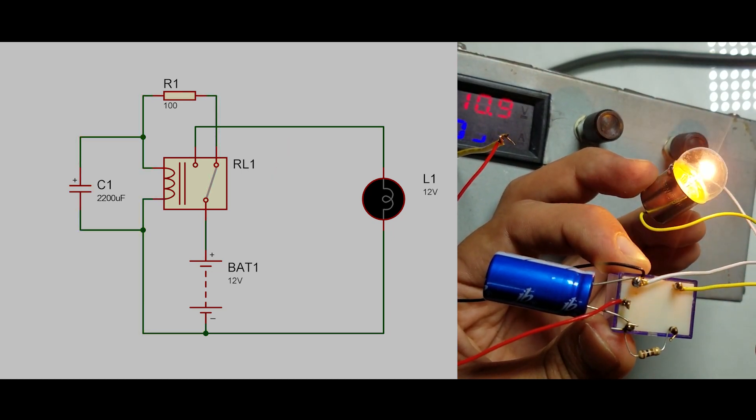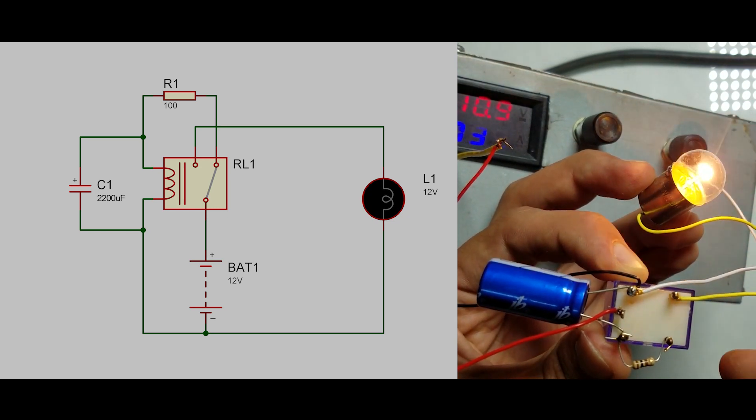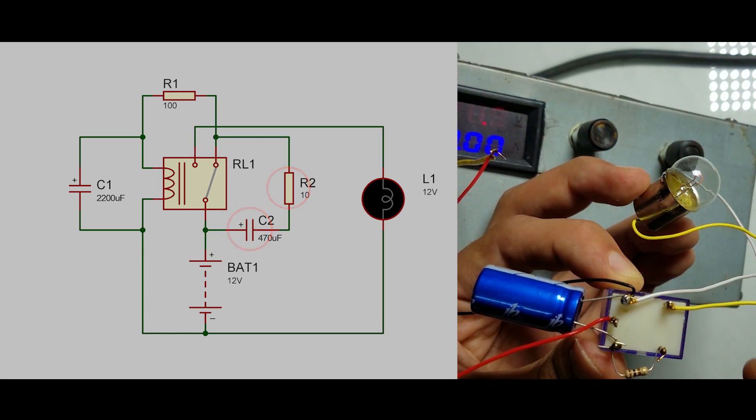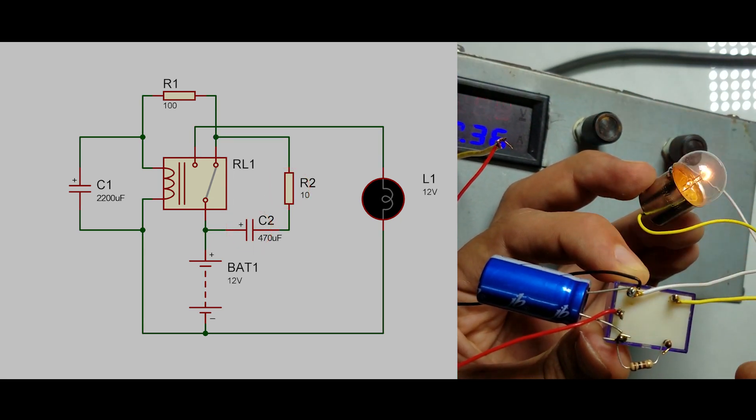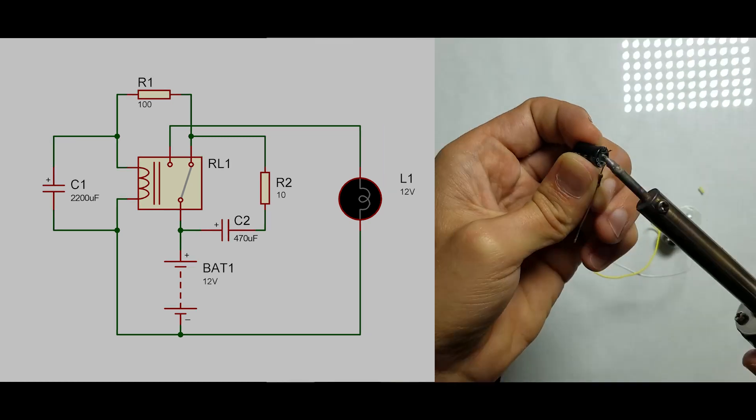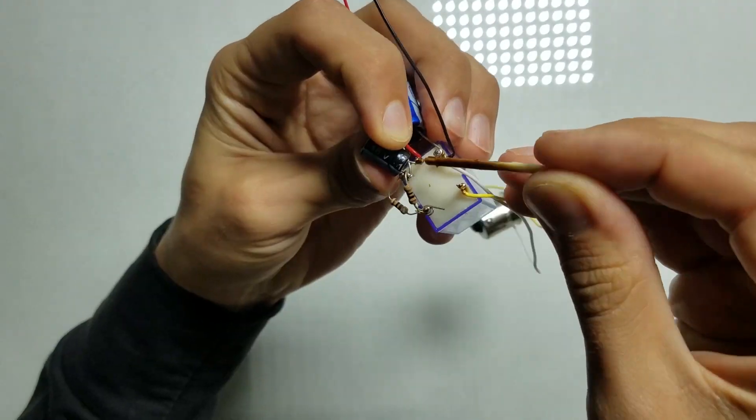Well, after thinking how we can overcome this problem, I came up with an idea. I decided to add to this circuit sequentially connected resistor and capacitor and connect them to the normally closed contacts. Let's try it. Let's connect a 10 ohm resistor and 470 microfarad capacitor.